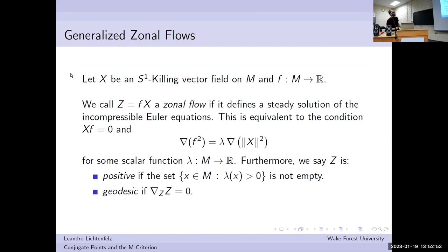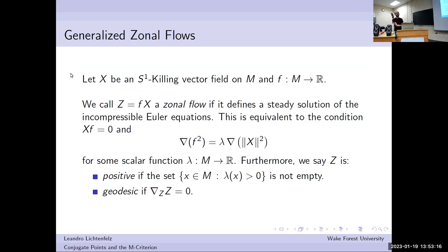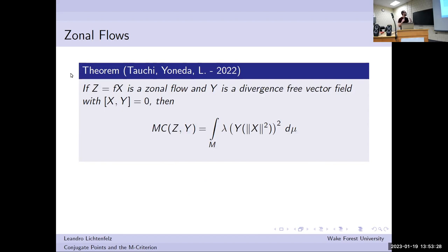[Question from audience]: On the previous slide, are you assuming the length of X is not constant? [Speaker]: I guess if it is constant you get the geodesic case. The ones I'm interested in won't be constant. [Question]: Is it induced by S1? [Speaker]: Yes, it's induced by an S1 action — I think the constant one might not exist. You have to have some symmetry. For this class of zonal flows, if you can find a divergence-free vector field that commutes with X, you get a simple formula. Looking at the integral, to make it positive you just need that squared term to be nonzero and lambda to be positive enough to overcome its negative part.